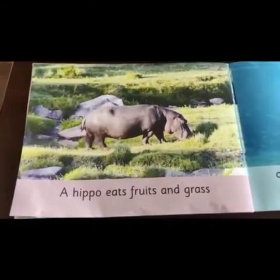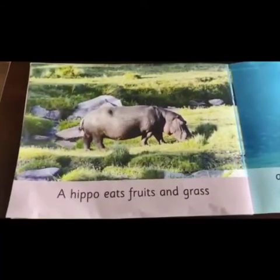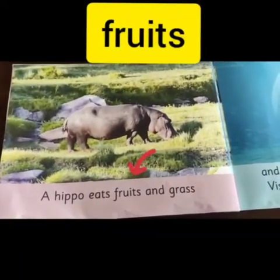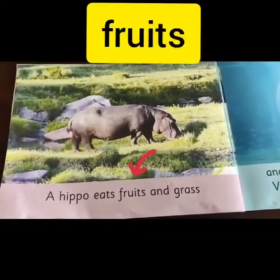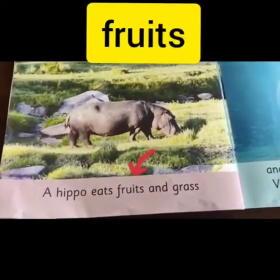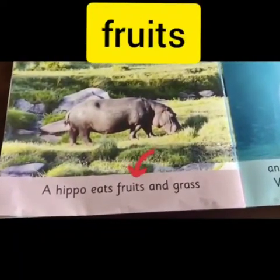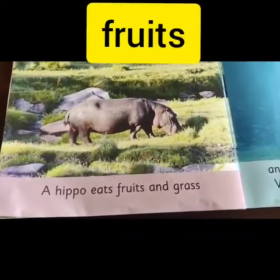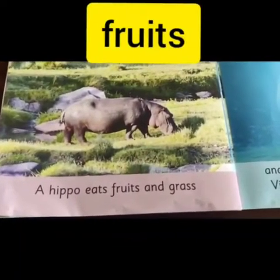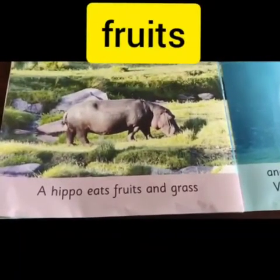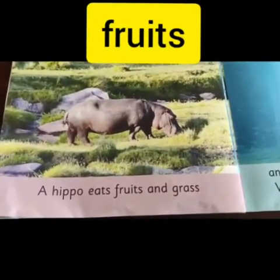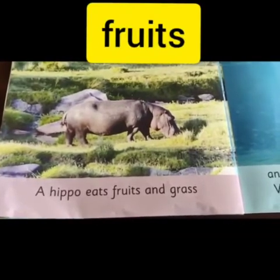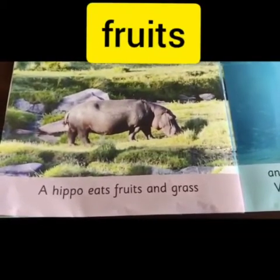Our next word is 'fruits'. Can you look for that word? Yes, correct, it's here. And what sentence can we make with that word? A hippo eats fruits and grass.